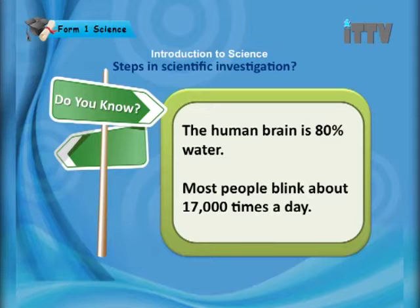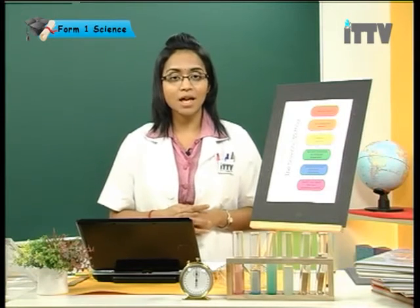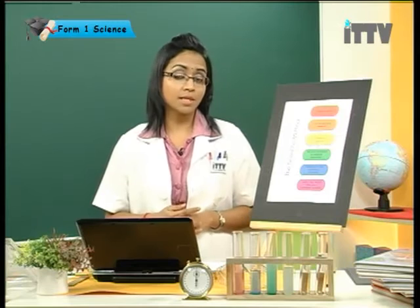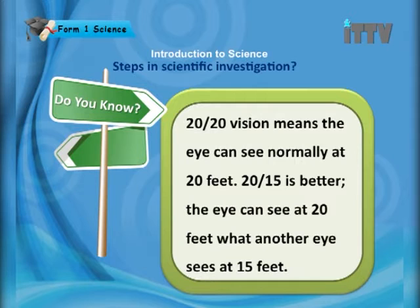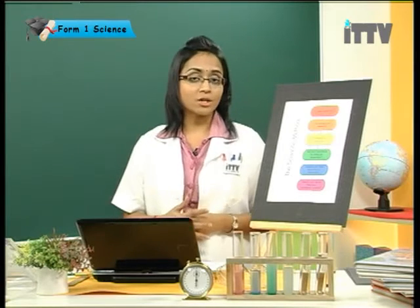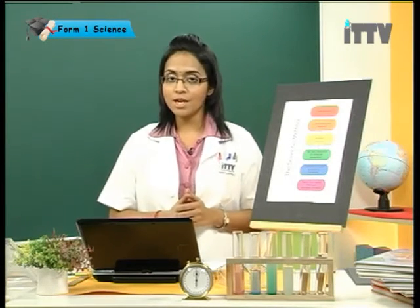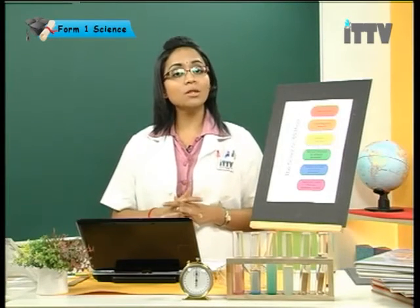The human brain is 80% water. Most people blink about 17,000 times a day — you don't realize while you're blinking, but you're blinking 17,000 times a day. Elephants have been known to remain standing after they die — elephants die standing. And lastly, 20-20 vision means the eye can see normally at 20 feet. 20-15 is better — the eye can see at 20 feet what another eye sees at 15 feet. So when the doctor tells you that you have 20-20 vision, that means you have perfect vision.